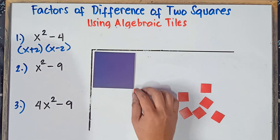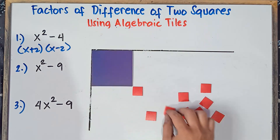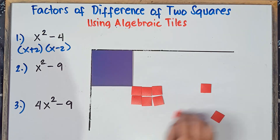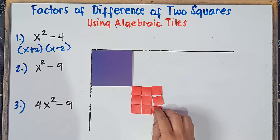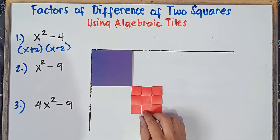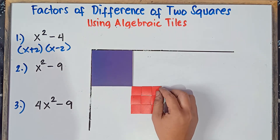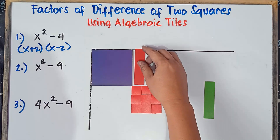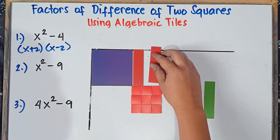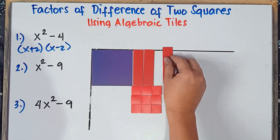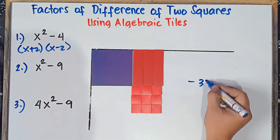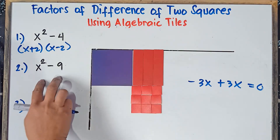We can group the 9 red tiles by 3. Put this on the corner: 3 rows of 3. Once again, we cannot form a rectangle yet. So we need to add x tiles. We can add negative 3x here — 1, 2, negative 3x. Therefore, we need to add positive 3x on the bottom, because negative 3x combined with positive 3x equals 0. The expression is still the same: x squared minus 9.